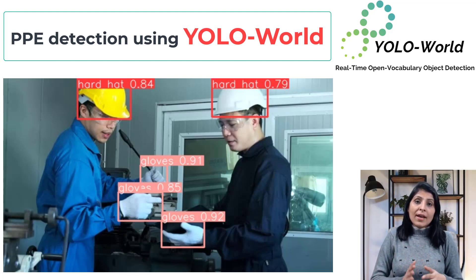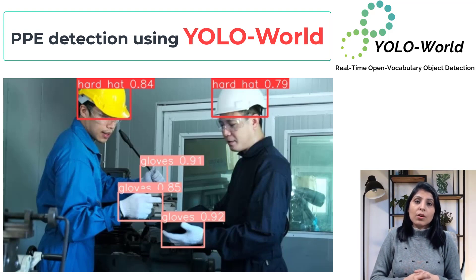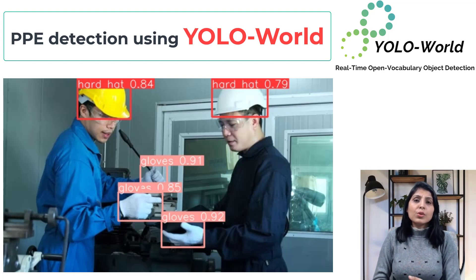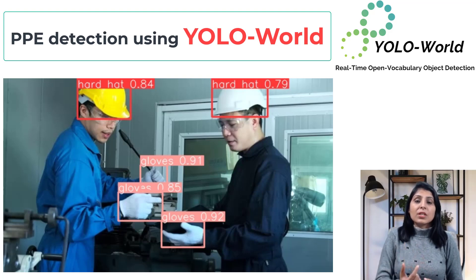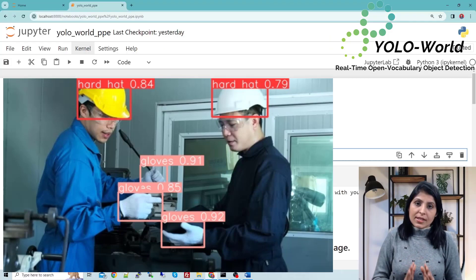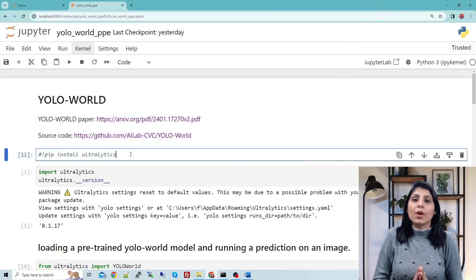But using YOLO World — as I've told you, it is a zero-shot object detection model — we are not going to use any dataset. We will only use the YOLO World model, then perform a few steps, and after those steps we will get our custom model. Using that custom model we can perform personal protective equipment detection on unseen data. So let's start and set up the environment first.